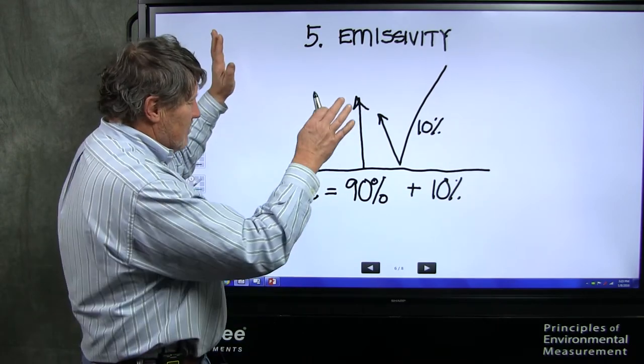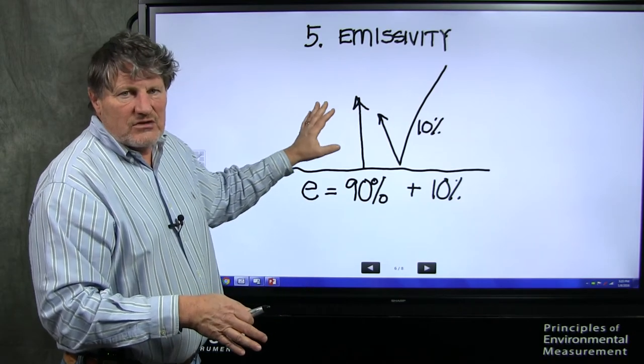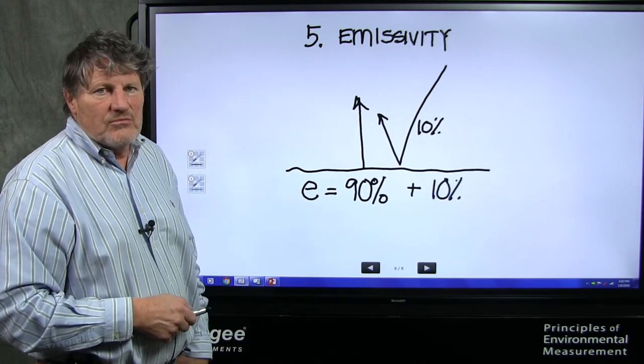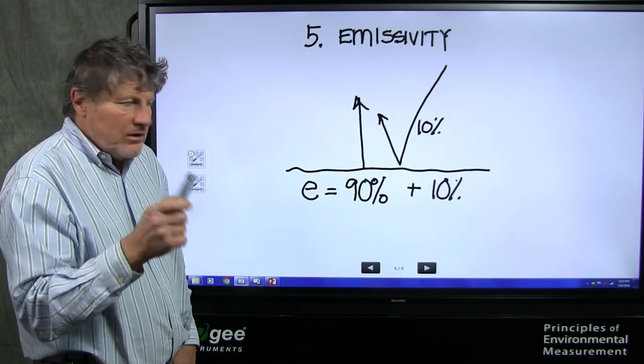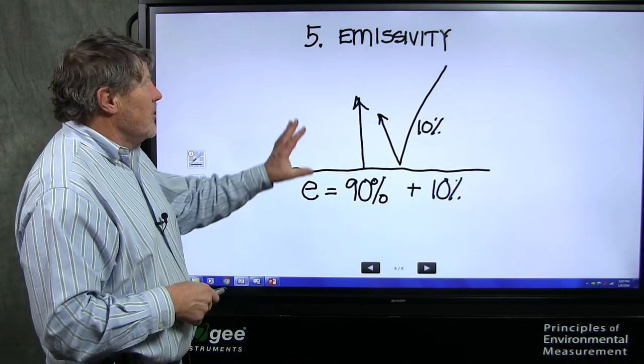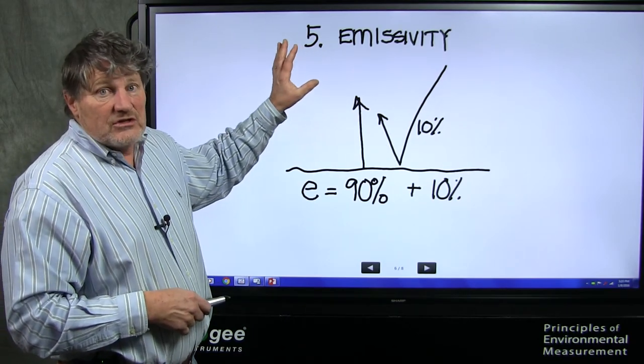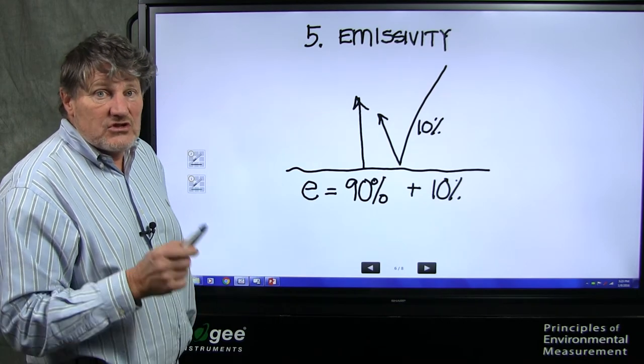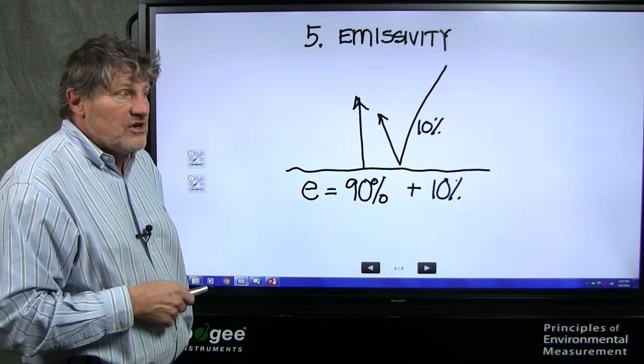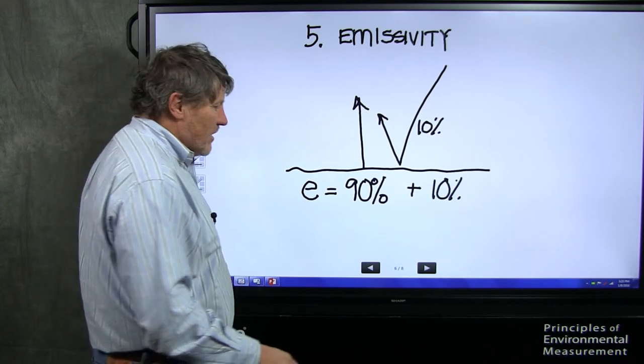Cheaper sensors don't account for this. Apogee, mathematically, can account for this and correct for problems with emissivity. We'll talk more about this in a more detailed seminar, but this can lead to significant errors if it's not properly corrected for in the sensor, and Apogee sensors allow for that.